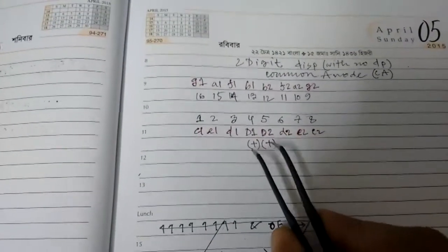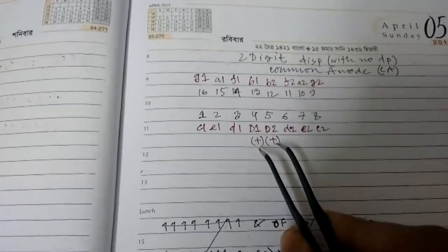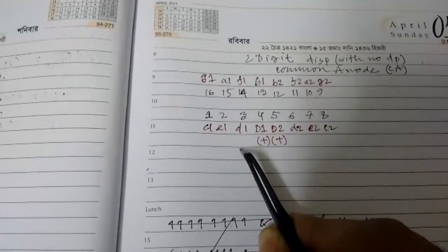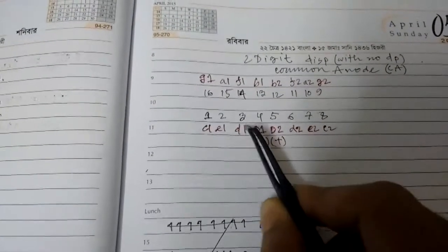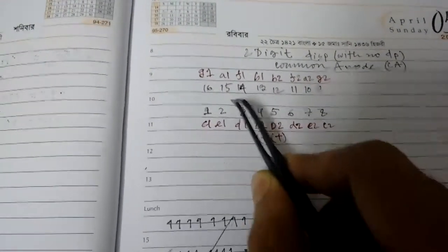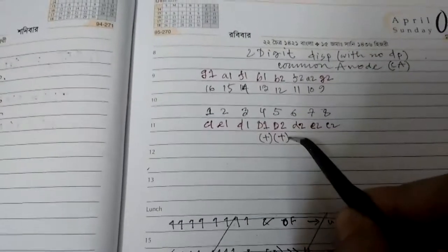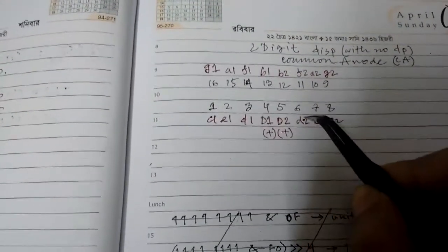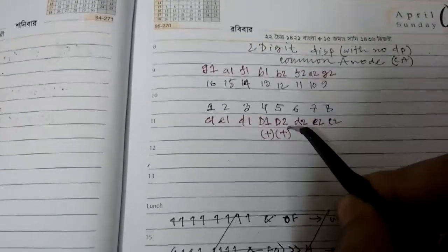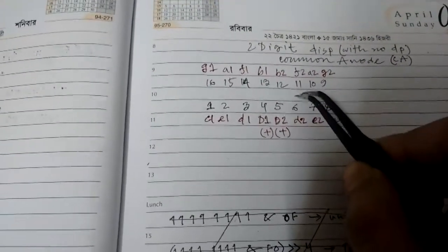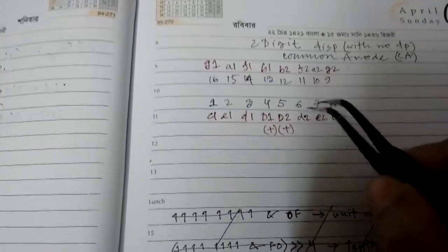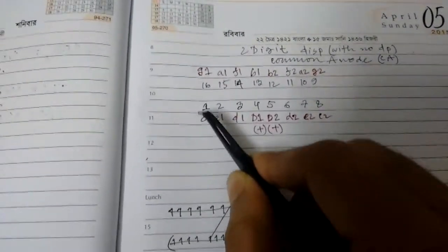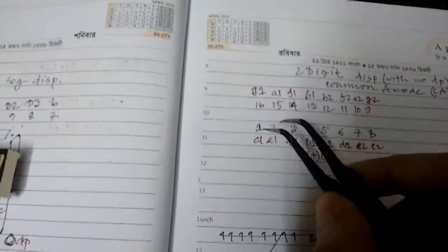And these two are the supply pins. So if you put VCC here and ground here, the D segment of display one will light up. And if you put VCC here and ground here, then the D segment of the second display, digit 2, will light up.